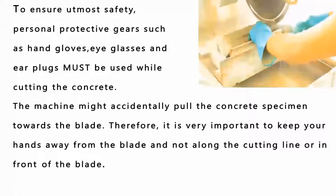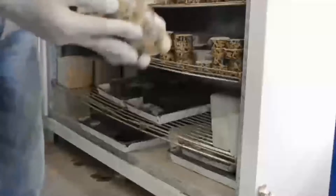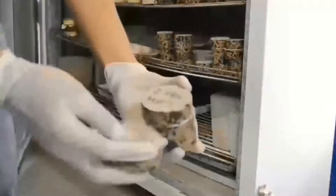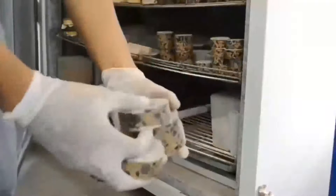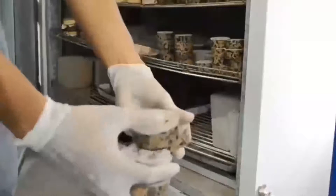The machine might accidentally pull the concrete specimens towards the blade. Therefore, it is very important to keep your hands away from the blade and not along the cutting line or in front of the blade. The specimen is then kept in the oven at 50 degrees Celsius for 7 days.